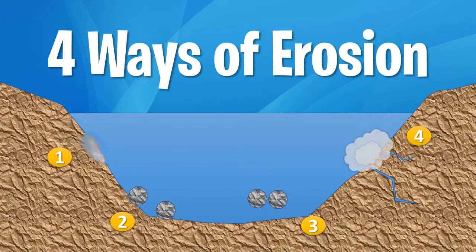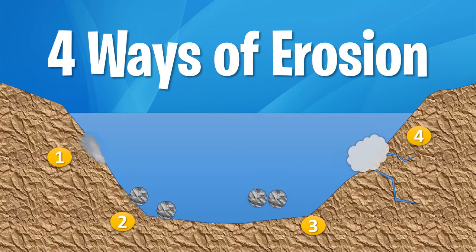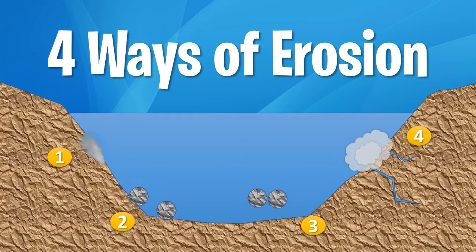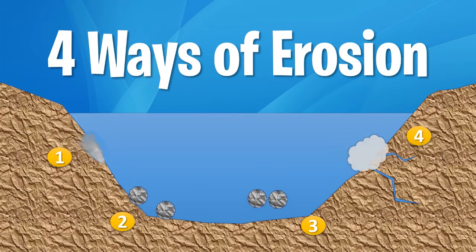In essence, there are four ways of coastal erosion. Number one, solution, is when there is a chemical breakdown of the rocks. Number two, abrasion, is when the rocks rub against surfaces to wear them away. Three, attrition, is when rocks collide and become smaller and smoother. And four, hydraulic action, is when air is forced into existing cracks causing them to wedge open.